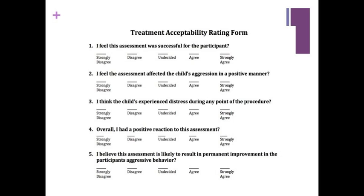The social validity questions were: (1) I feel this assessment was successful for the participant. (2) I feel this assessment affected the child's aggression in a positive manner. (3) I think the child experienced distress during any point of the procedures. (4) Overall, I had a positive reaction to this assessment. (5) I believe this assessment is likely to result in permanent improvement in the participant's aggressive behavior.